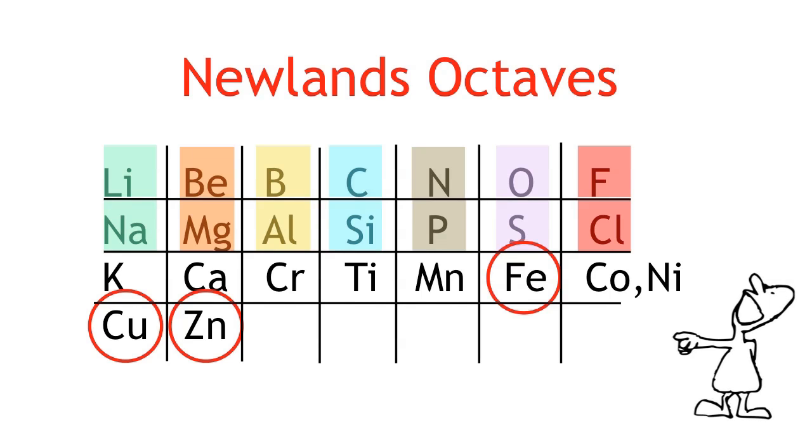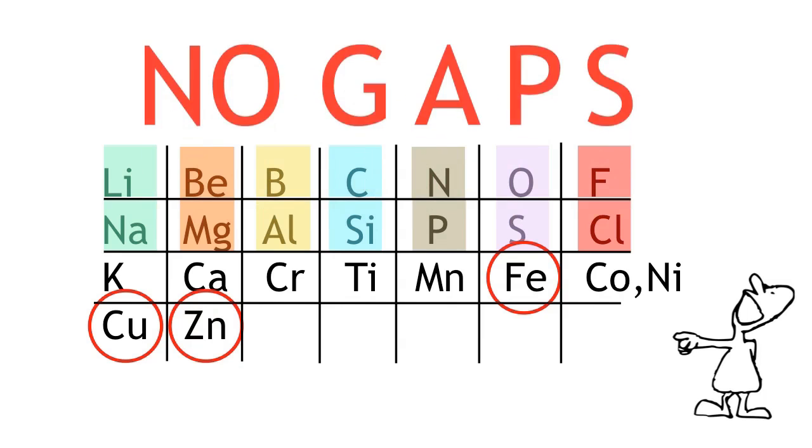His theory was met with ridicule. But he was close. The problem with his arrangement was that he left no gaps. Not all the elements had been discovered yet.